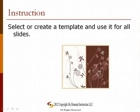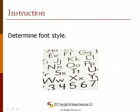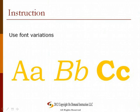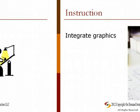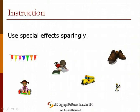Now let's look at the visual element of your presentation. Select or create a template and use it for all slides. Select background and text colors that provide contrast for easy viewing. Determine font style — sans-serif styles such as Arial, Comic Sans, and Tahoma are recommended for clarity. Minimum font size should be at least 24 so it's easy to read from anywhere in the room. Use font variations such as bold or italics for emphasis rather than changing font types. Select graphics carefully and use them in moderation. Determine the size of graphics for visibility and integrate them with the text. Use special effects, movement, and sound sparingly — effects should not compete for attention with the content of the presentation.